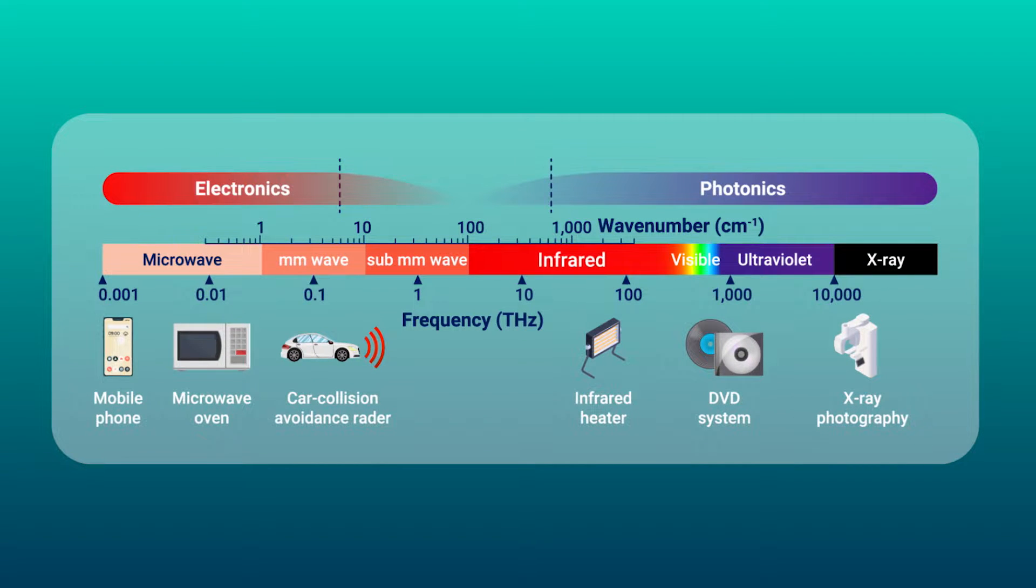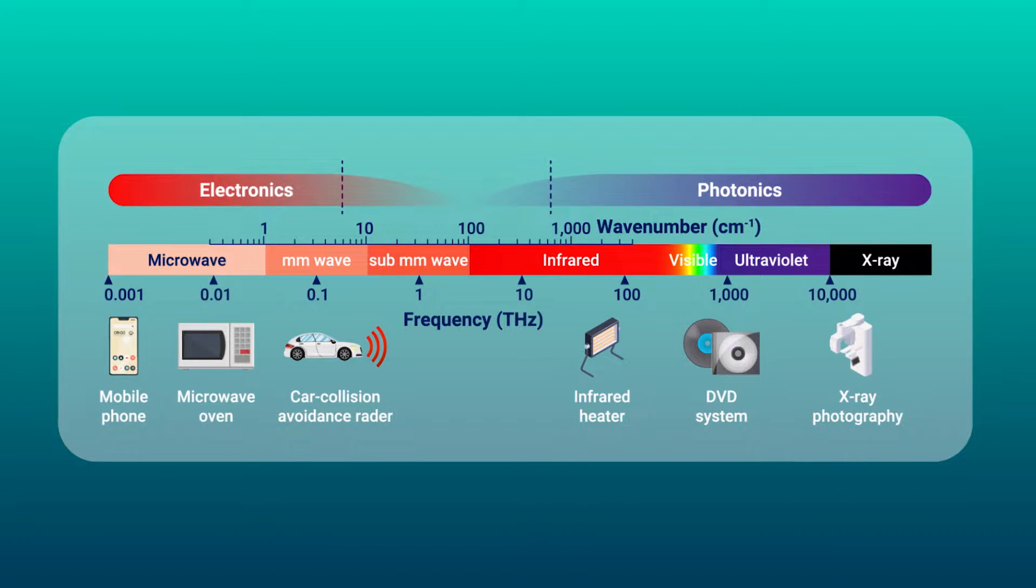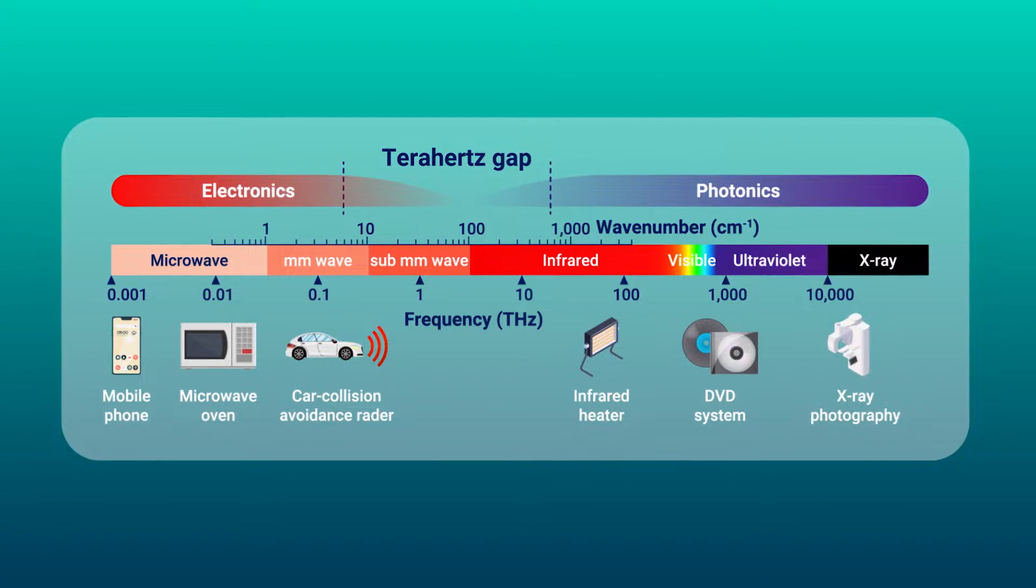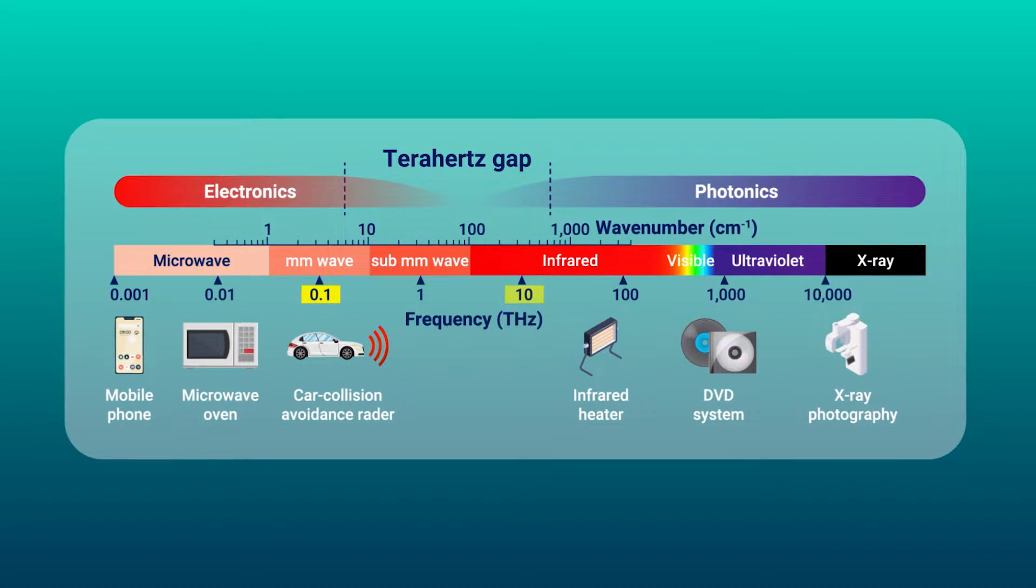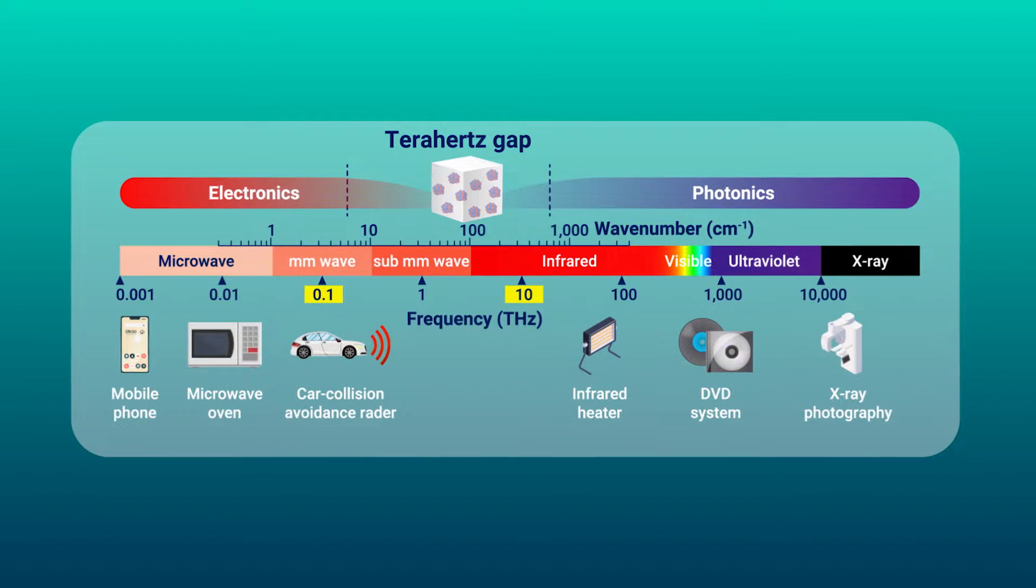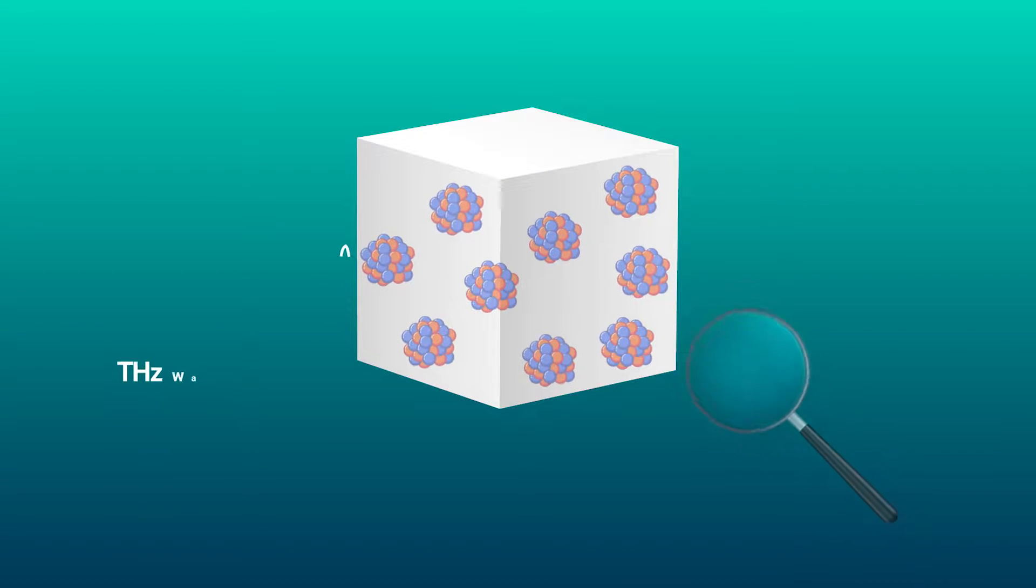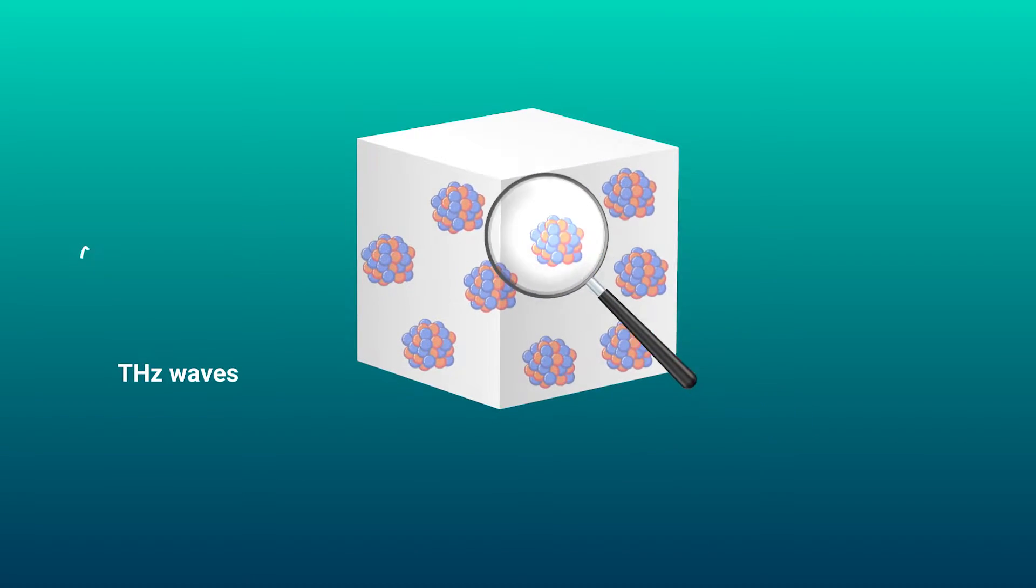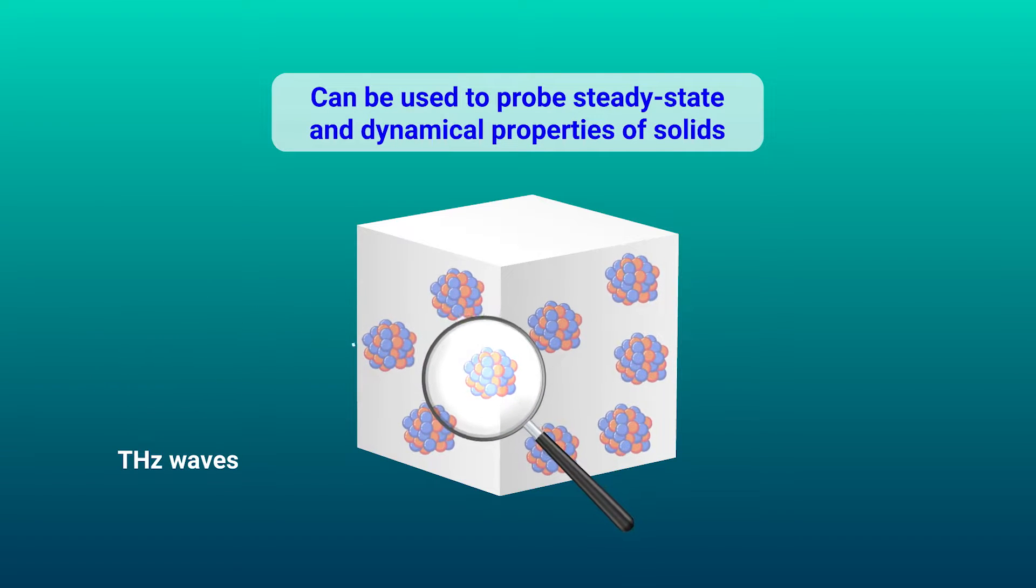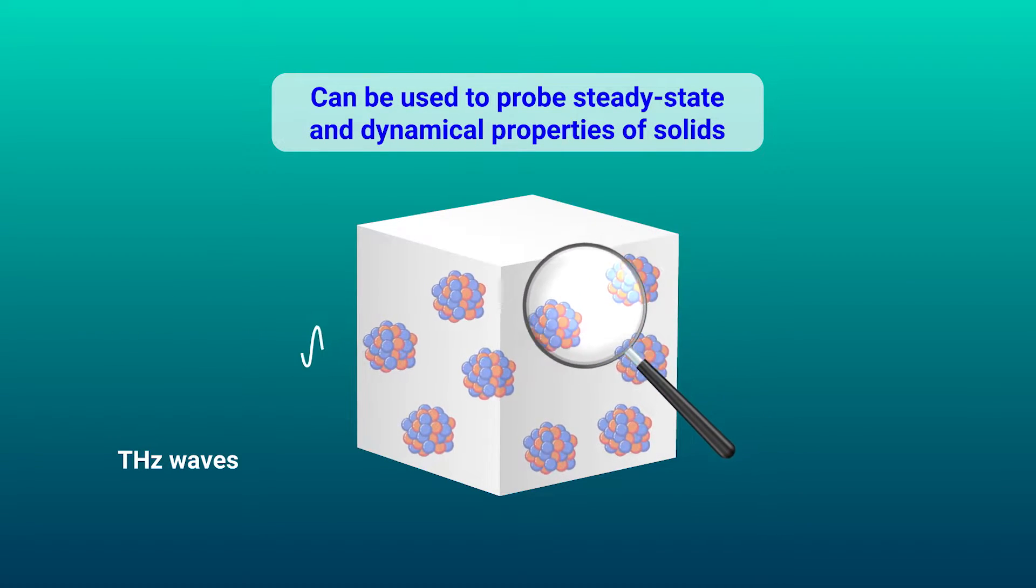The region between infrared radiation and microwaves in the electromagnetic spectrum is known as the terahertz region. The range of frequencies covered in this region is significant as it encompasses various excitation frequencies in solids. As a result, emissions of electromagnetic waves in the terahertz region can be used to probe the physical properties of solids, including both steady-state and dynamical properties.